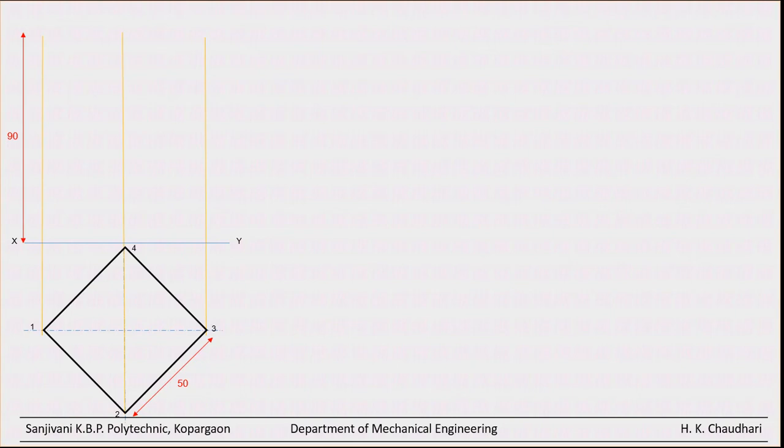Draw the initial views of the prism and xy line. Then draw the diagonals and prepare a square of given side of 50 mm. Name all the points and then project them in the front view. Now take the height of 90 mm which is given in the problem. Then from this top, draw a locus. Now we have this front view of this prism.